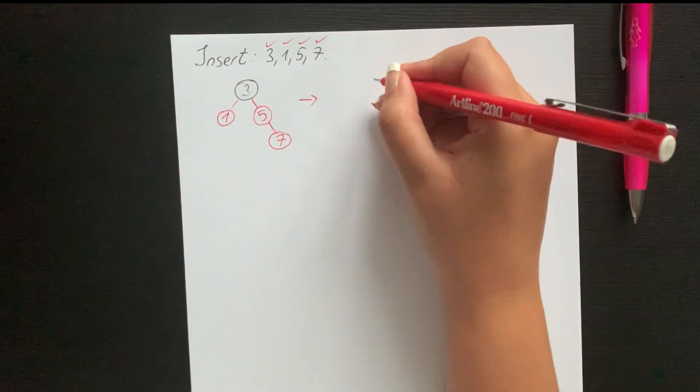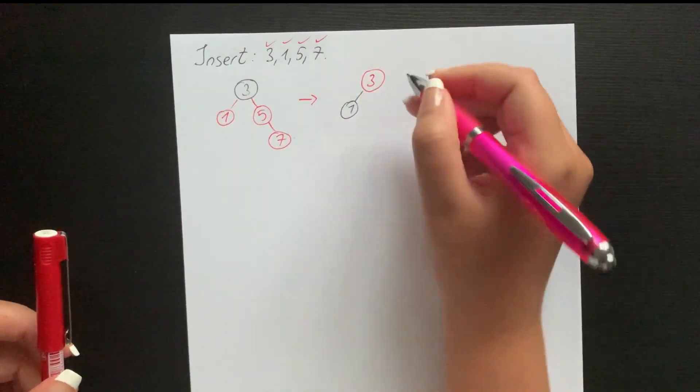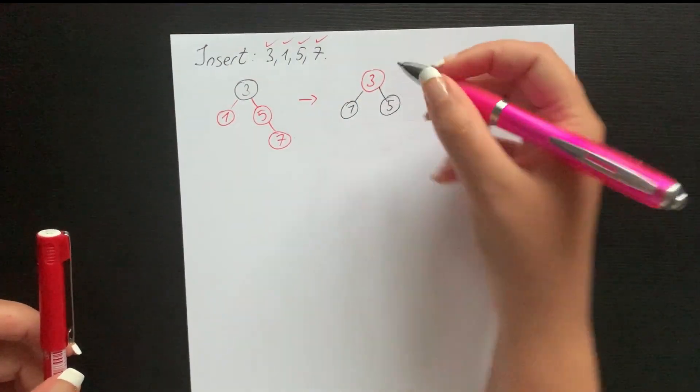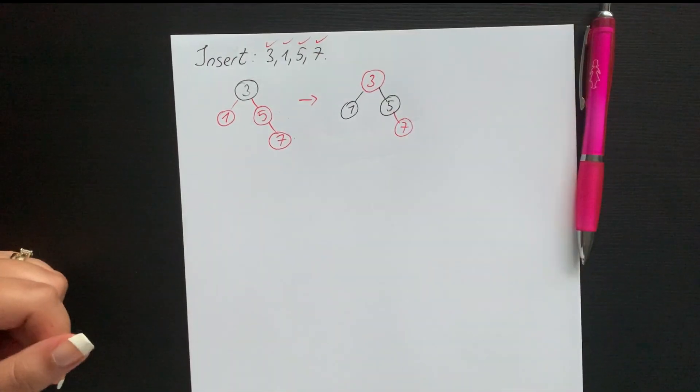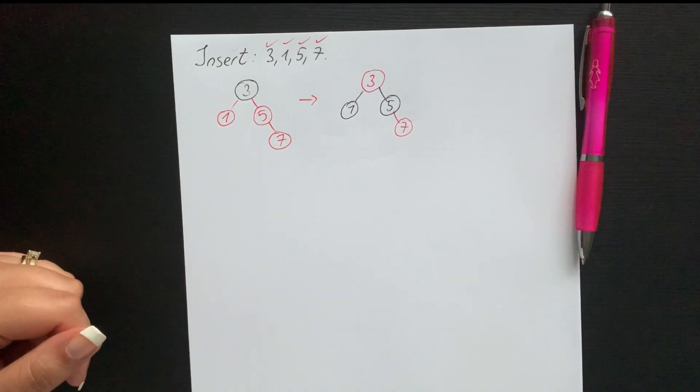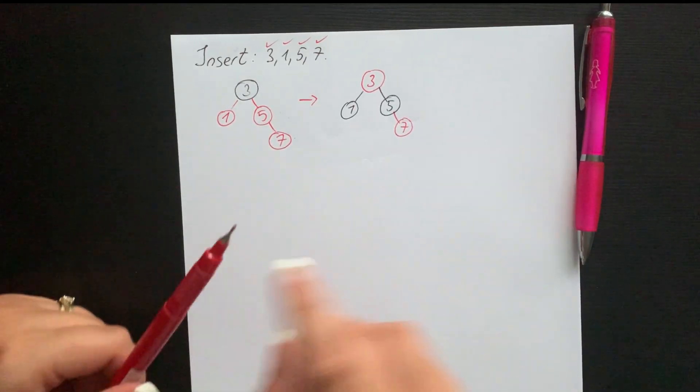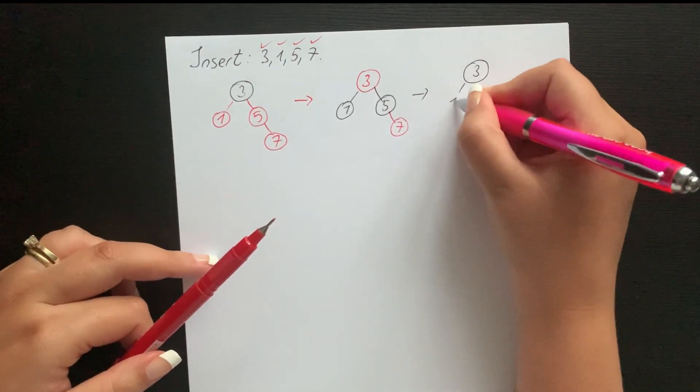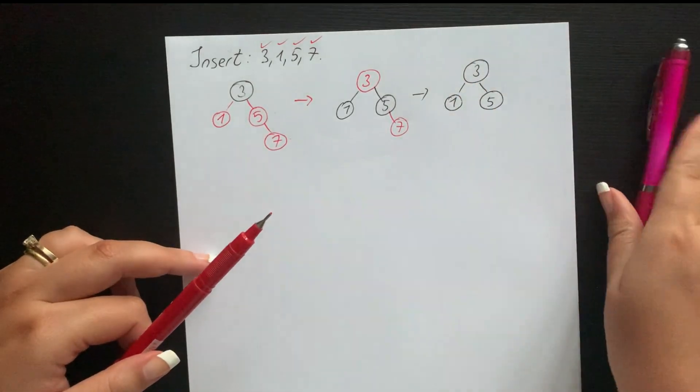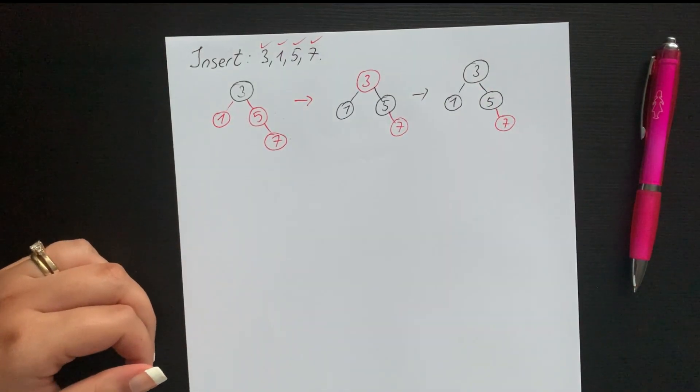But is this an actual valid red black tree? No, it's not because it does not follow the first rule: the root always has to be black. So what we do is recolor and we do it like this: three is gonna be black, then one and five, and then seven. Now we have a valid red black tree.